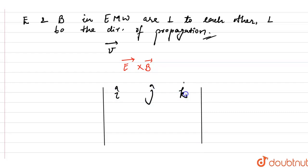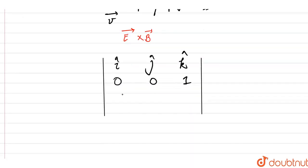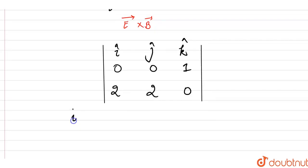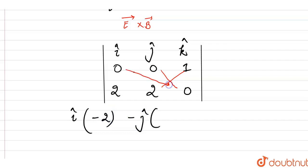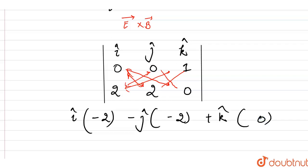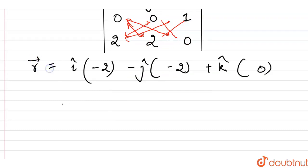Let's calculate the cross product of E and B. Setting up the determinant with i-cap, j-cap, k-cap: the electric field is k-cap, so components are (0, 0, 1), and the magnetic field is 2i minus 2j cap, so components are (2, -2, 0). This gives i-cap times (0·0 minus (−2)·1) = i-cap times 2 = 2i-cap; minus j-cap times (0·0 minus 2·1) = minus j-cap times (−2); plus k-cap times (0·(−2) minus 0·2) = 0.